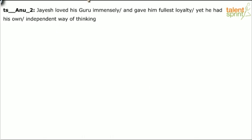Jayesh loved his guru immensely. That's part A. And gave him fullest loyalty. That's part B. Yet he had his own, that's part C, independent way of thinking. That's part D. So four parts, and we need to figure out which part has the error.